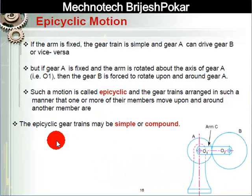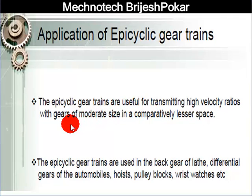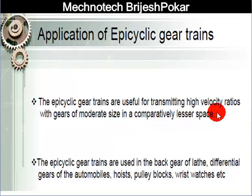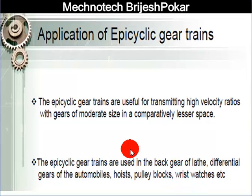The application of epicyclic gear train: it is useful for transmitting high velocity ratios with gears of moderate size and comparatively lesser space. It is used in the back gear of a lathe, differential gear of an automobile, hoist, pulley blocks, and wrist watch, etc.